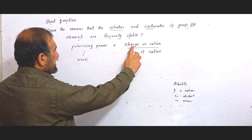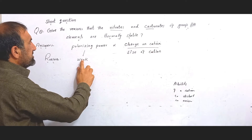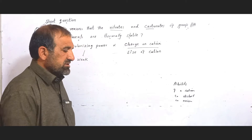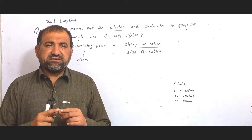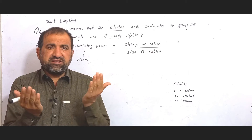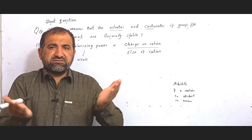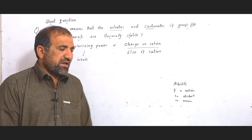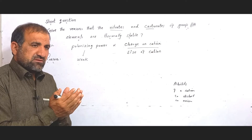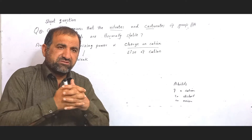The charge is not too high and the polarizing power is not too high. For second A group elements, the charge is not too high and the size is not too small. Due to having large size and low charge density, the polarizing power of the cation is weak.